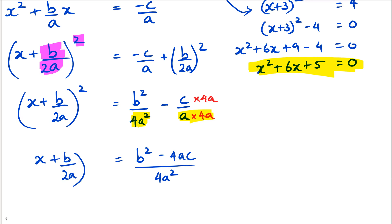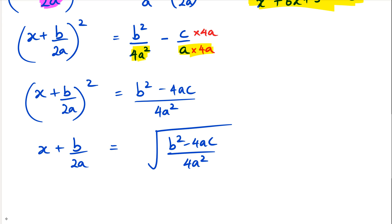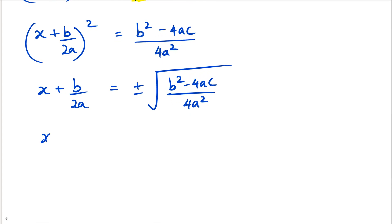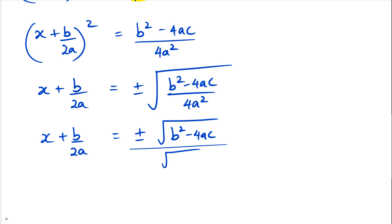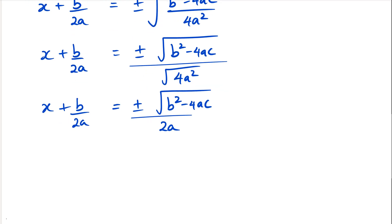Now I need to write x by itself, so I take the square root of both sides. On the right-hand side I get √(b² − 4ac) / √(4a²), and remember when you take a square root you get plus or minus. Since we can split the square root of a fraction, √(4a²) simplifies to 2a. So we have x + b/(2a) = ±√(b² − 4ac) / (2a).